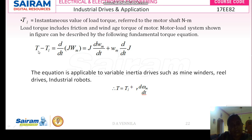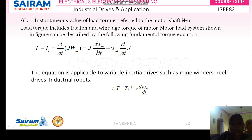When motor torque equals load torque, and as time increases your speed diminishes, then the electrical drive achieves the equilibrium state. At equilibrium, the variable inertia term becomes negligible and the moment of inertia differential term equals zero. You then get: T = TL + J·(dωM/dt). This equation is applicable only for variable inertia drives such as mine winders, reel drives, and industrial robotics.